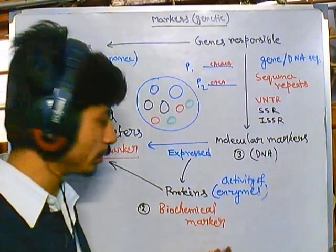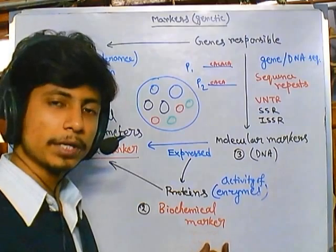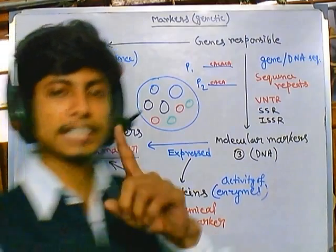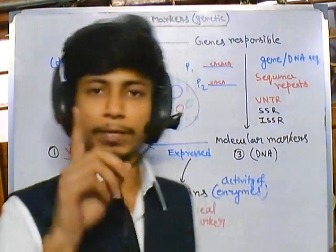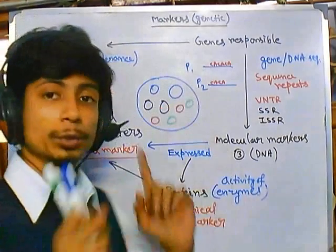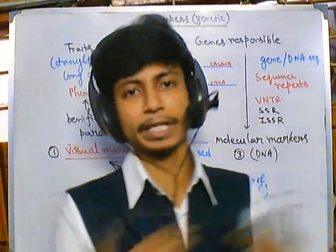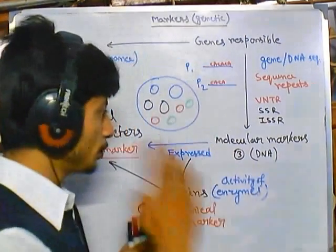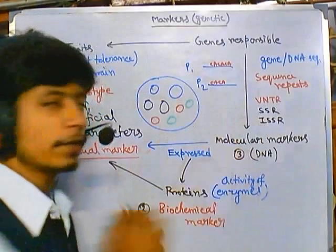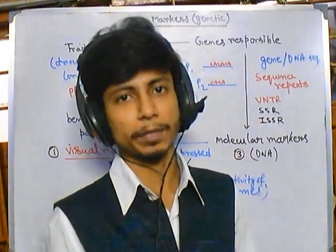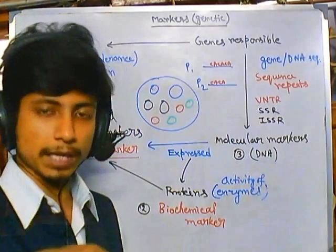Biochemical markers also have advantages since we can quantitate them in the laboratory. In an experiment, if you want to perform crosses between plants to develop a crop, you must choose all three markers together — not selecting any one alone — because each has its own merits and demerits. You must assess a particular parameter based on all three different markers and then conclude.